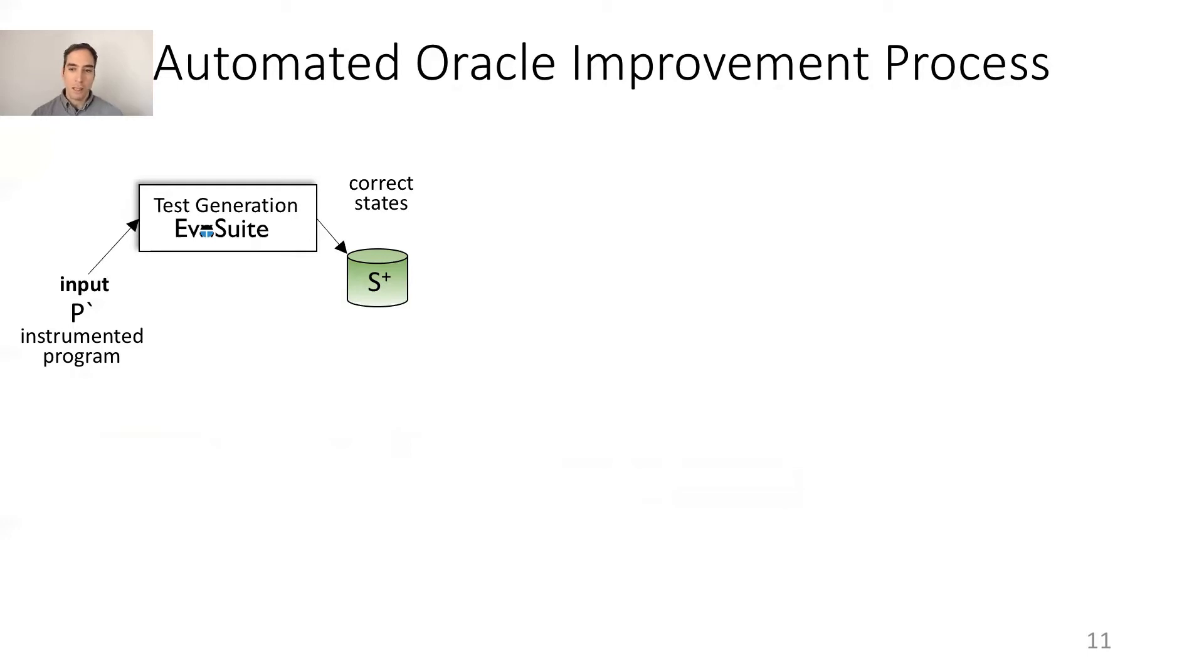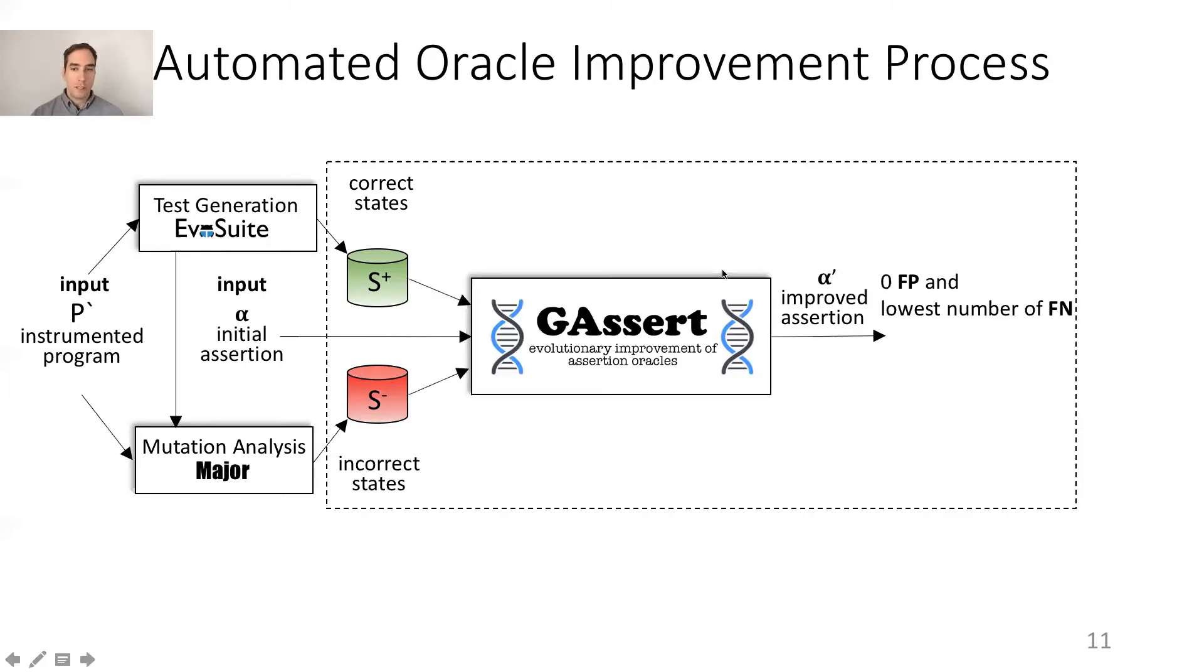Executing the test cases on the instrumented version yields an initial set of correct states. Then it executes the tests on a series of mutations using the mutation analysis tool Major, obtaining an initial set of incorrect states. These initial states are very crucial to reduce the iterations with Oasis and let Oasis search for false positives and false negatives. Given the initial assertion alpha, J-Assert will return an improved assertion alpha prime with zero false positives and the lowest number of false negatives.